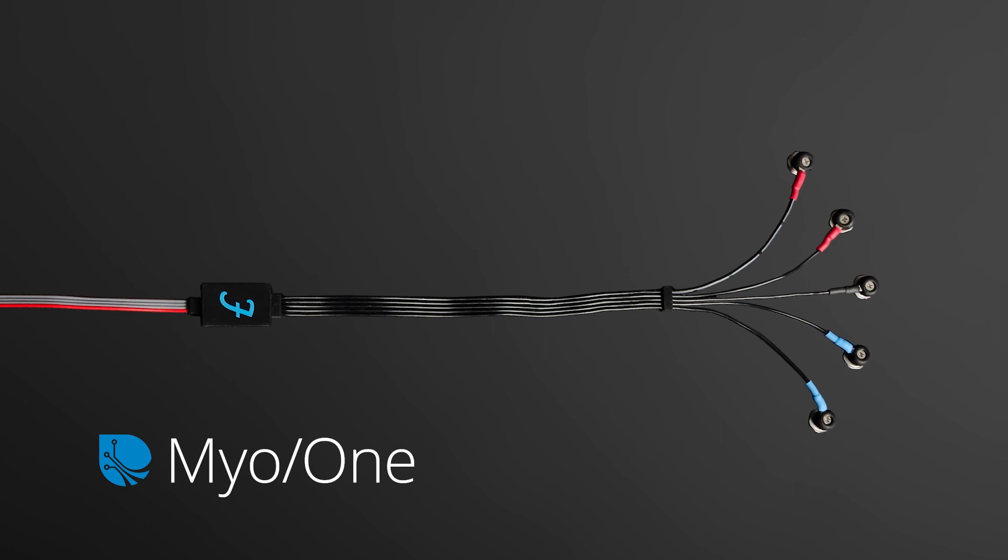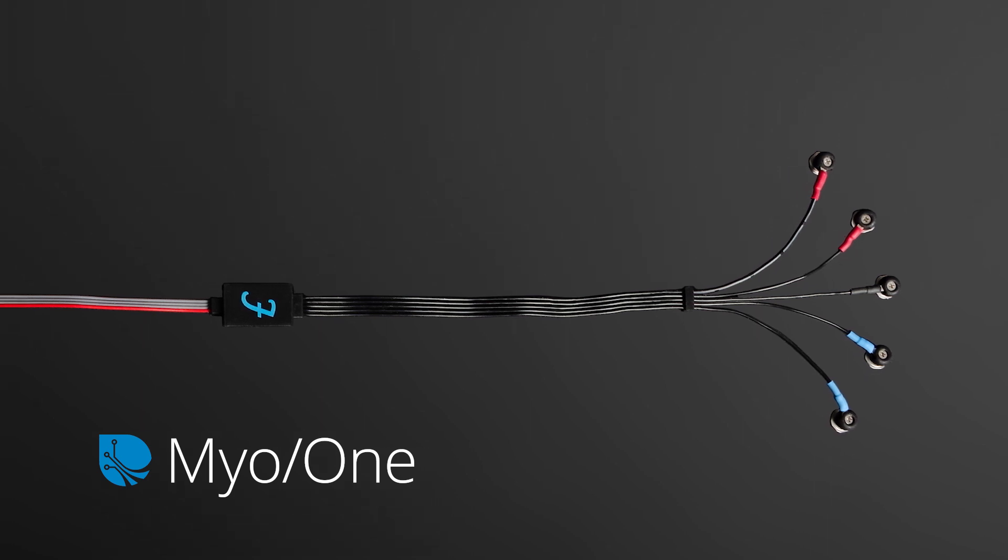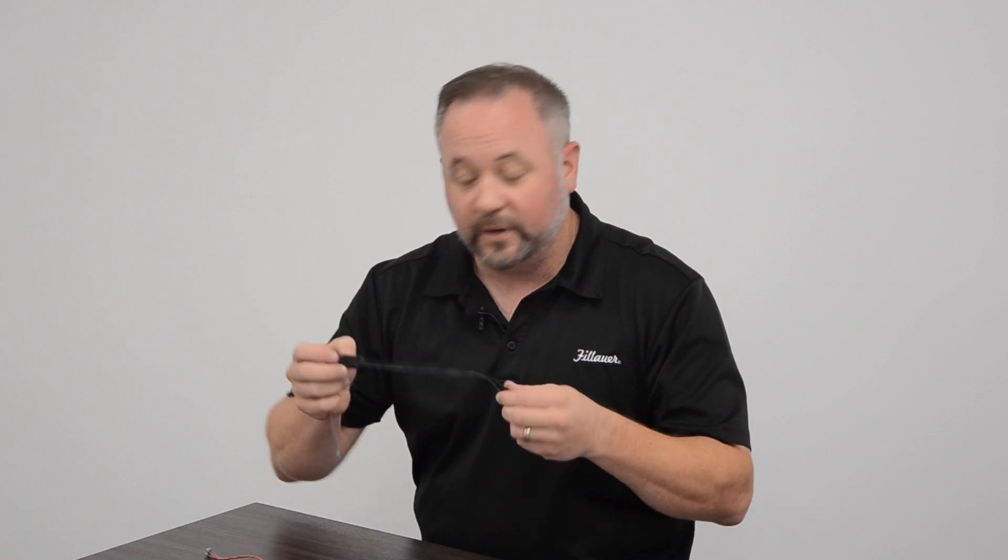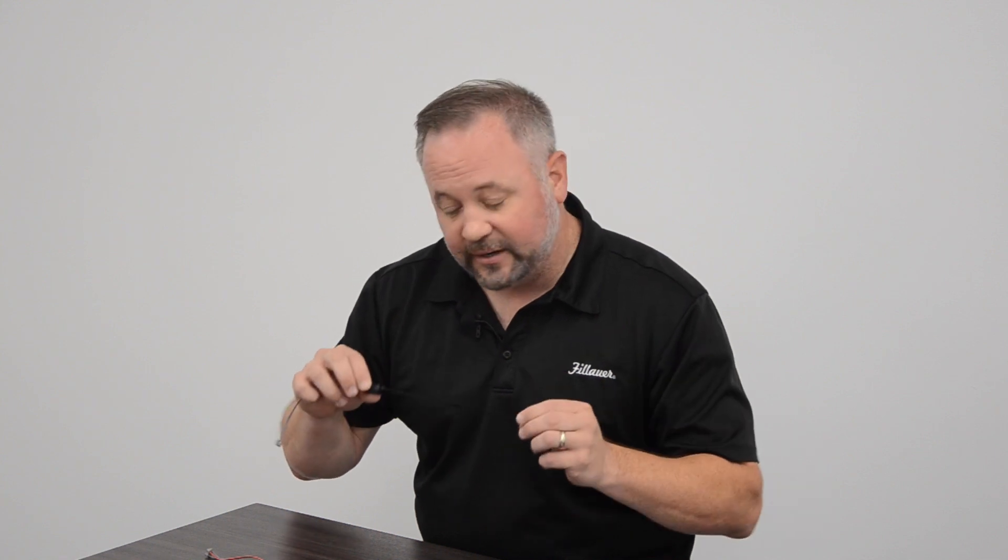Today I'm going to talk about the brand new product from Philar. This is the Myo-1 Electrode. This was a partnership with Co-App to develop an electrode that solved a lot of the problems we have in trying to fit upper limb myoelectric patients.